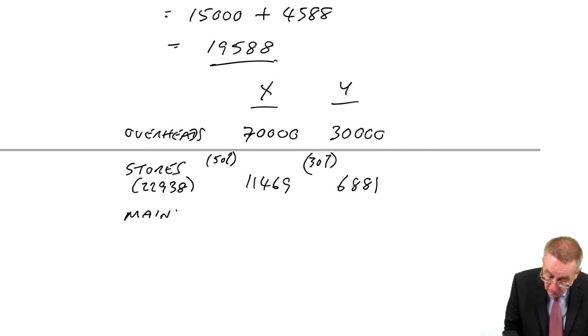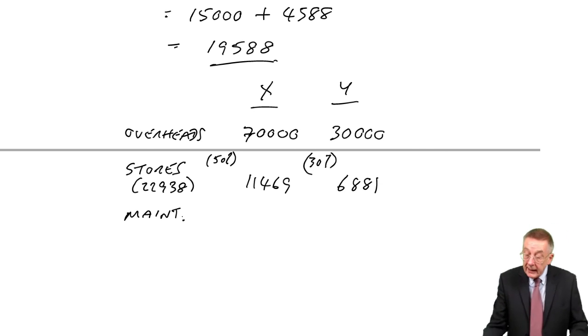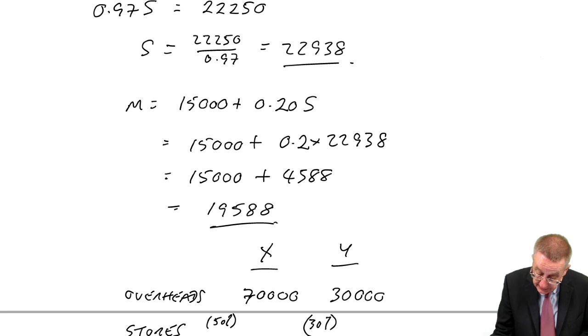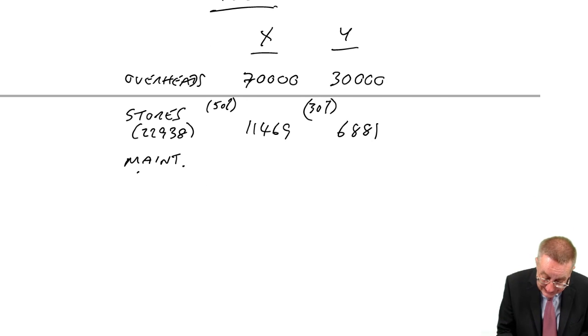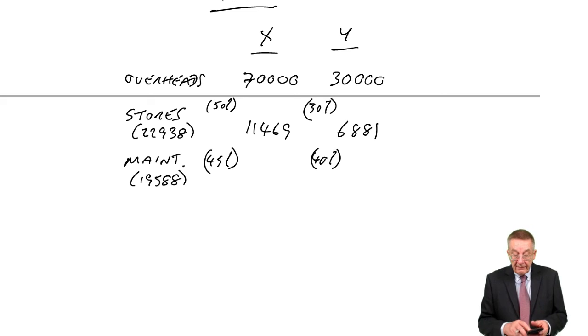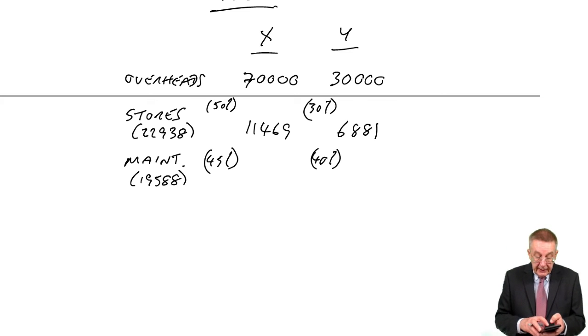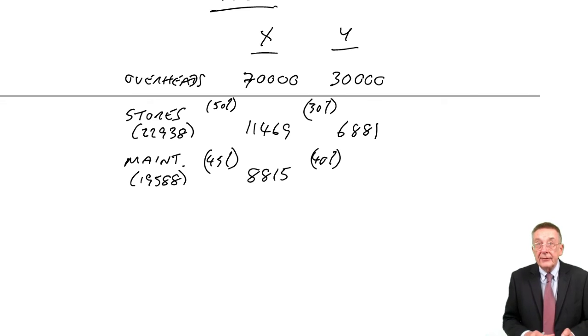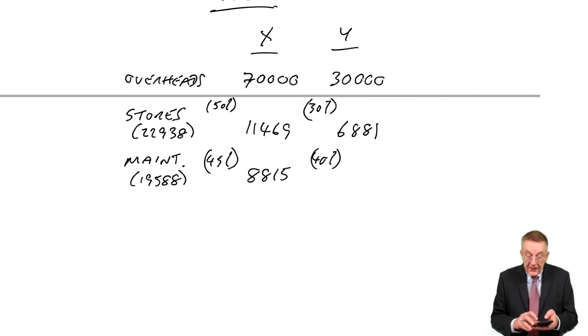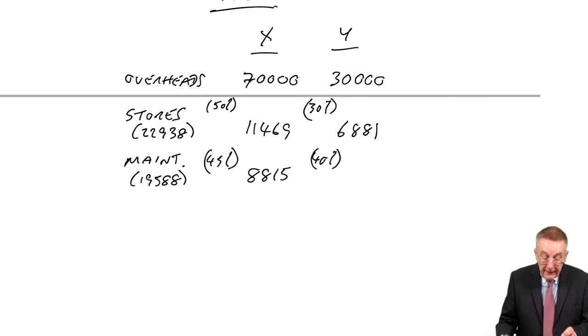Similarly, for maintenance. We take the figure we calculated a minute ago, which was 19,588. And how does maintenance do the work? 45% is for X, 40% is for Y. Well, 45% of 19,588 is 8,815. 40% of 19,588 is 7,835.